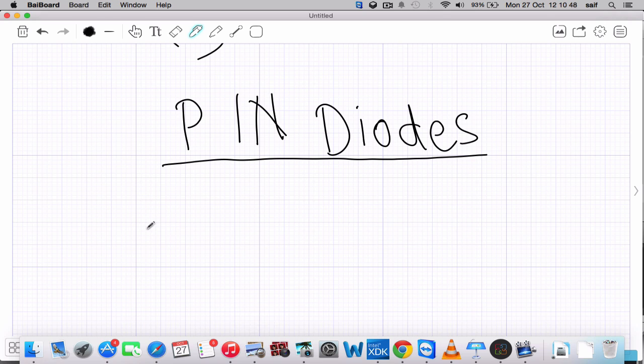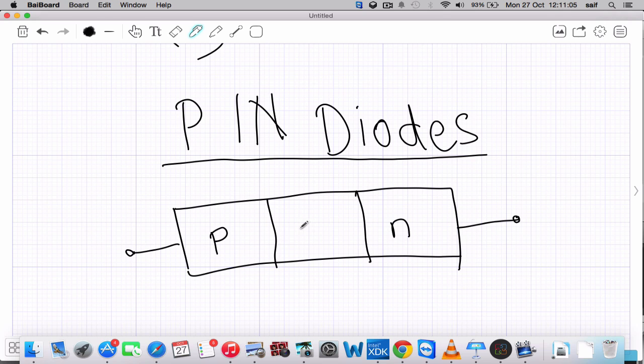First we will see the construction of the PIN diode. The PIN diode is constructed like this: this is the P region, this is the N region. Now this middle is the I. This I is a very highly intrinsic resistivity which is sandwiched between the P region and N region. Now we can also use a P region with high resistivity, which is called as a pi region, or if we use N with high resistivity, then it is called as a nu region. So this is the construction of the PIN diode.